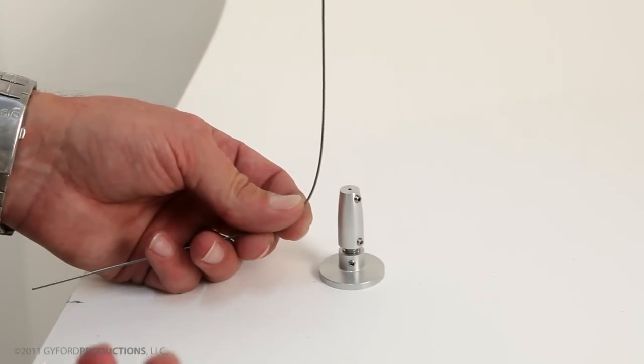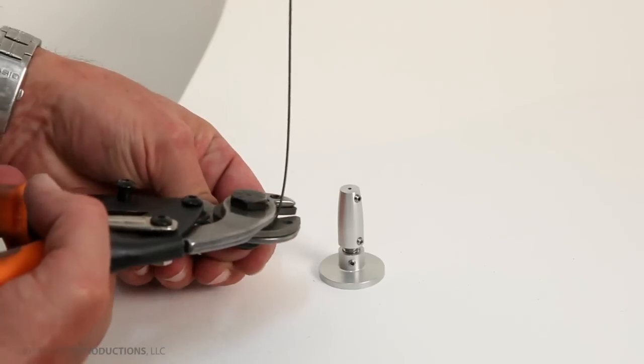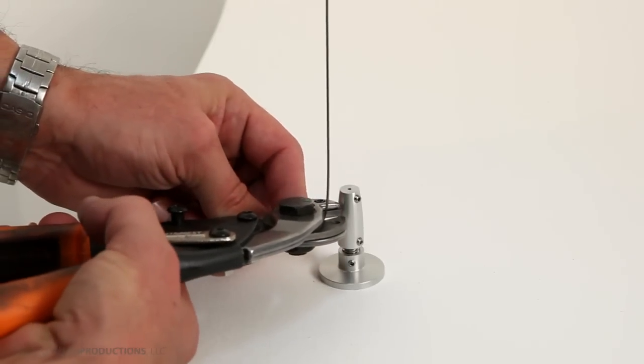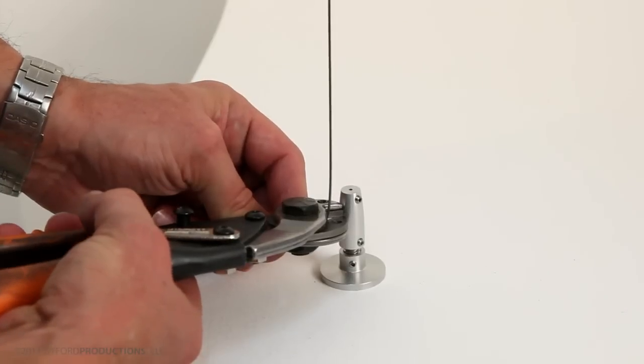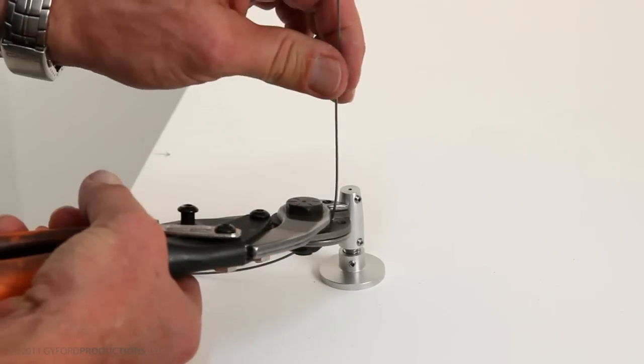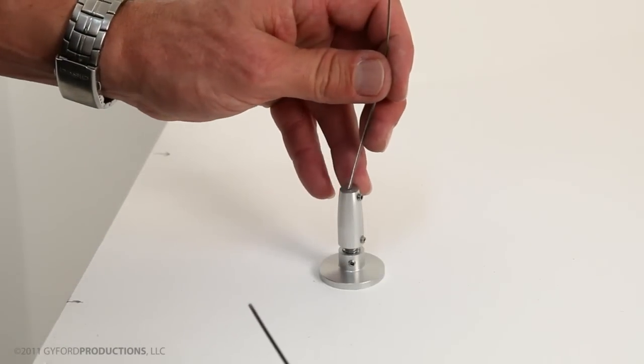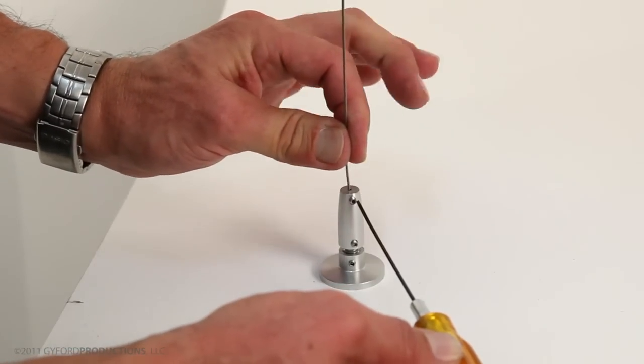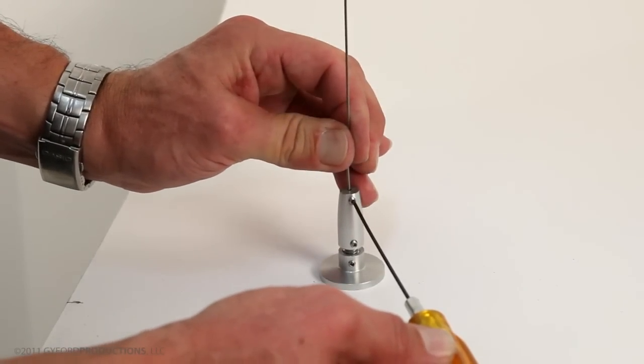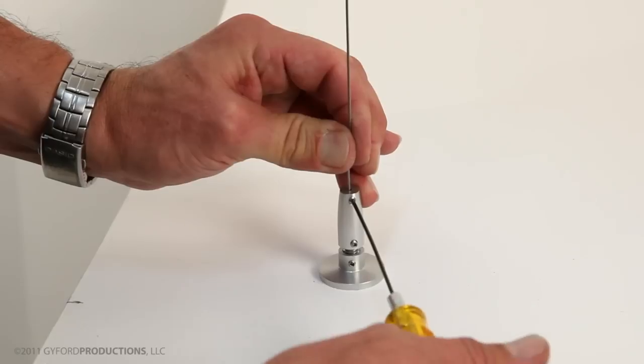Then we'll get our bypass cutters. Bring down the wire nice and firm, and cut it off just below the top set screw. Put the wire right in the hole, pull it down as firmly as you can, and then set this set screw against it.